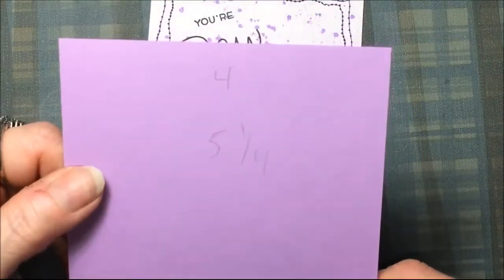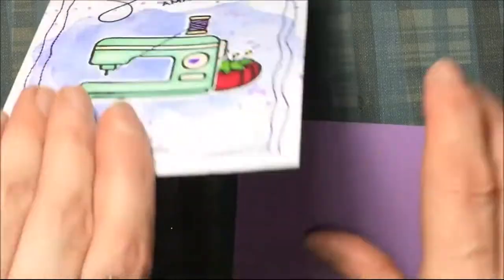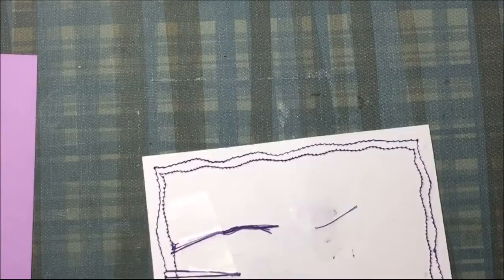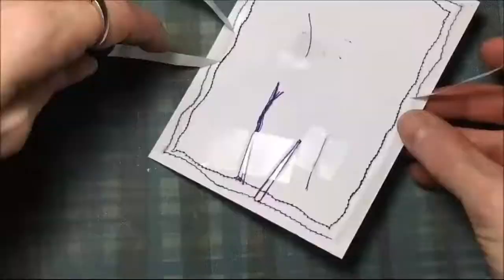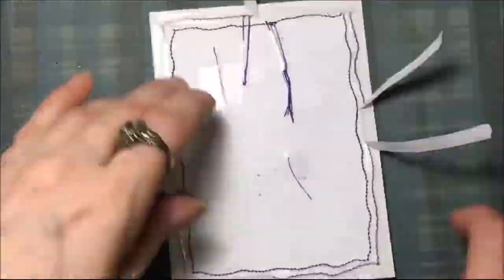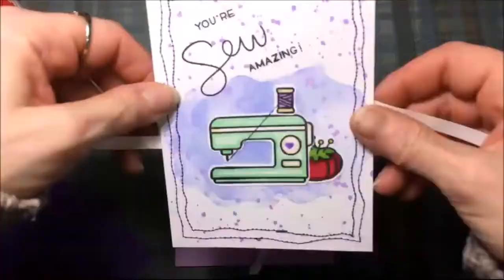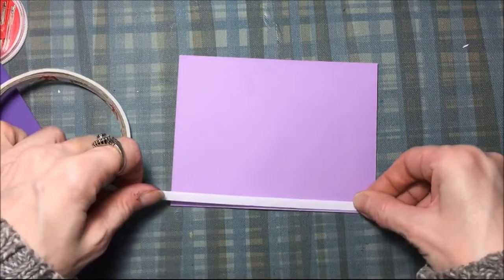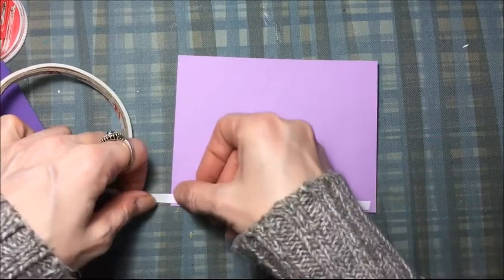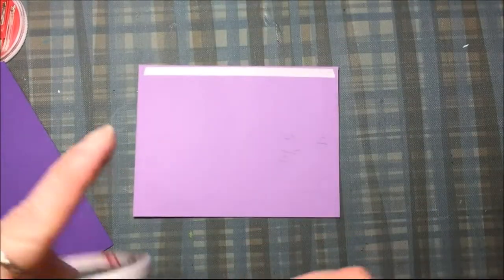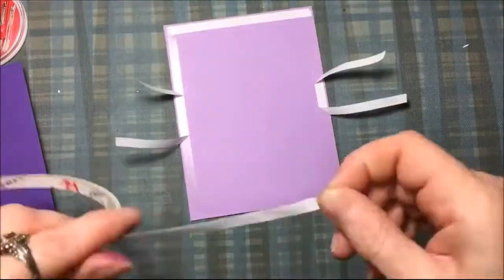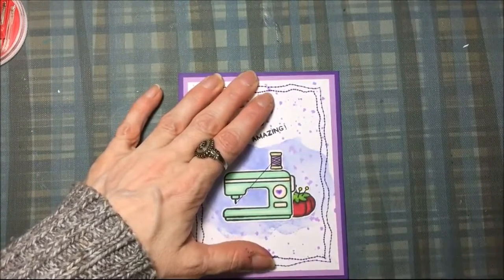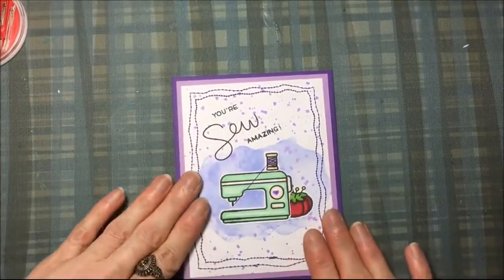Now I'm going to take that card front and I'm going to put it on that purple. That's four by five and a quarter. I'm just going to use some double stick tape to do that. Then I'm going to take those layers and put them on five and a half by four and a quarter, a darker piece of purple card stock. Again, I'm using the double stick tape.